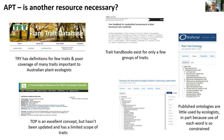One published trait dictionary for plants does exist, but it's quite incomplete and hasn't been updated since its inception. We've been in touch with the group that developed TOP and they'd be very excited to jump-start that again using our trait dictionary as a basis.